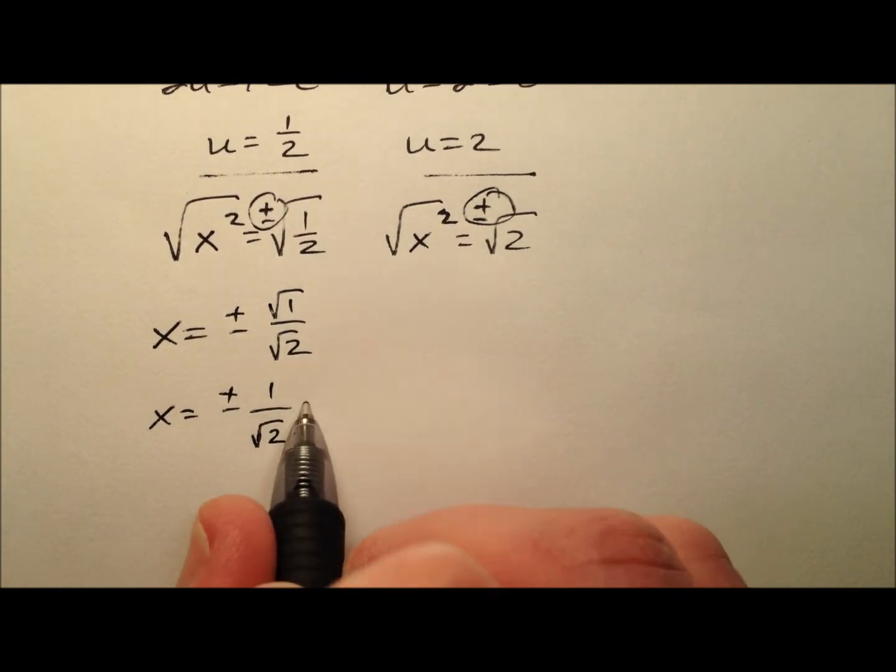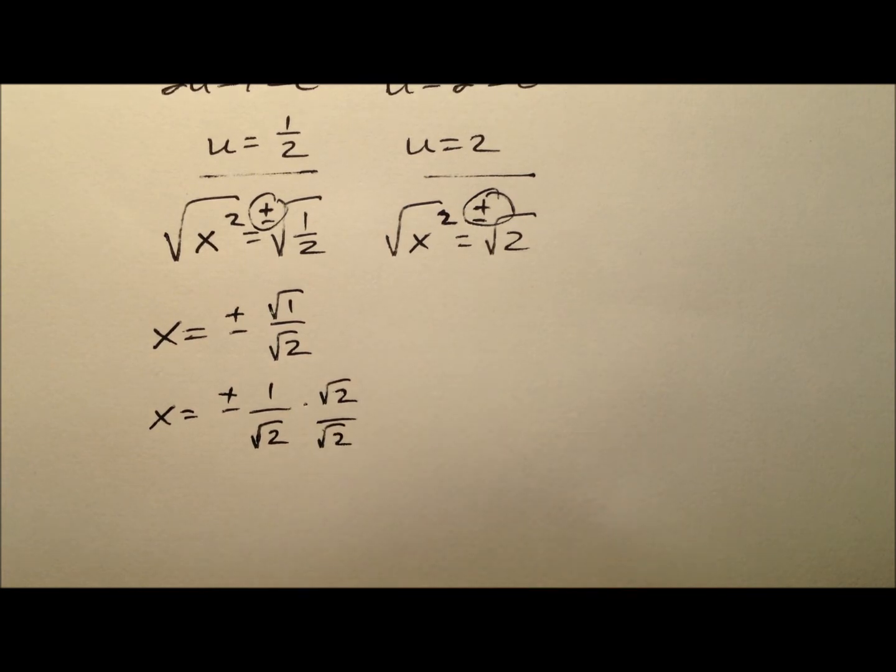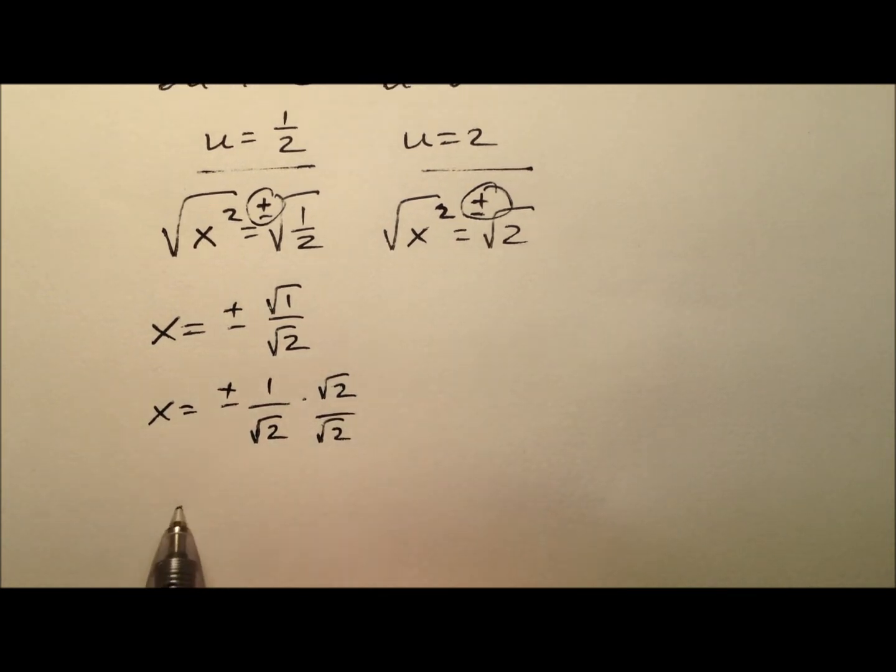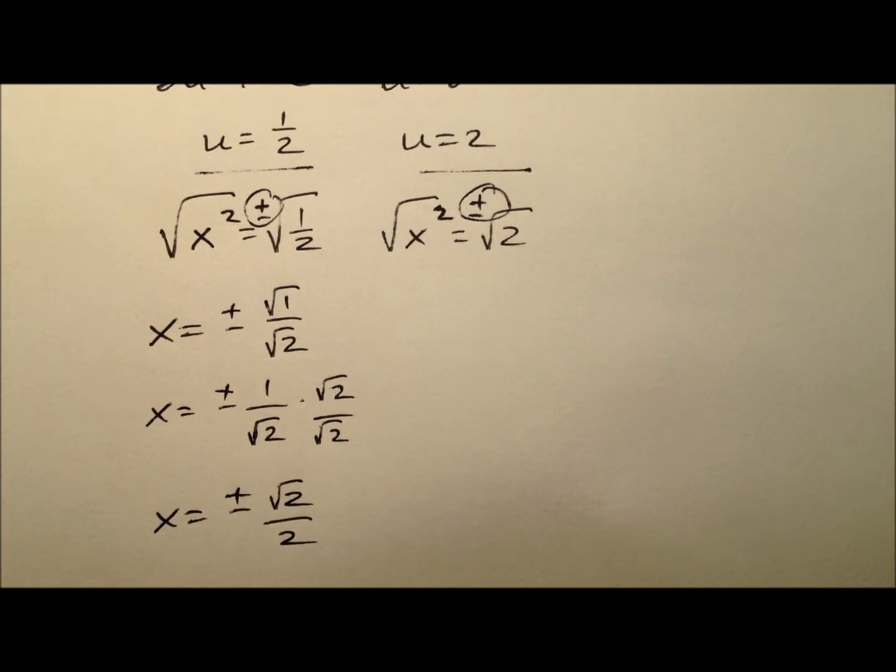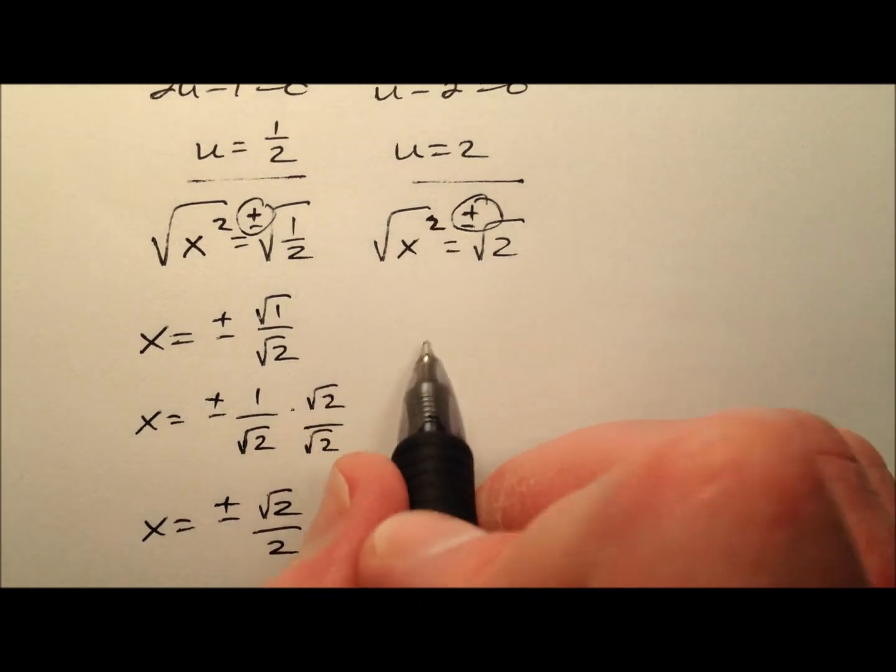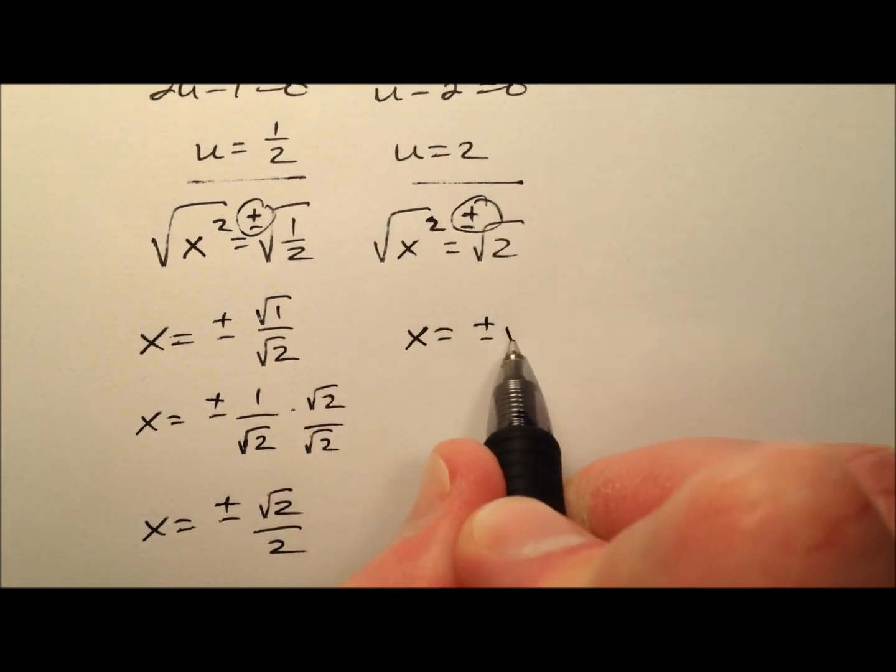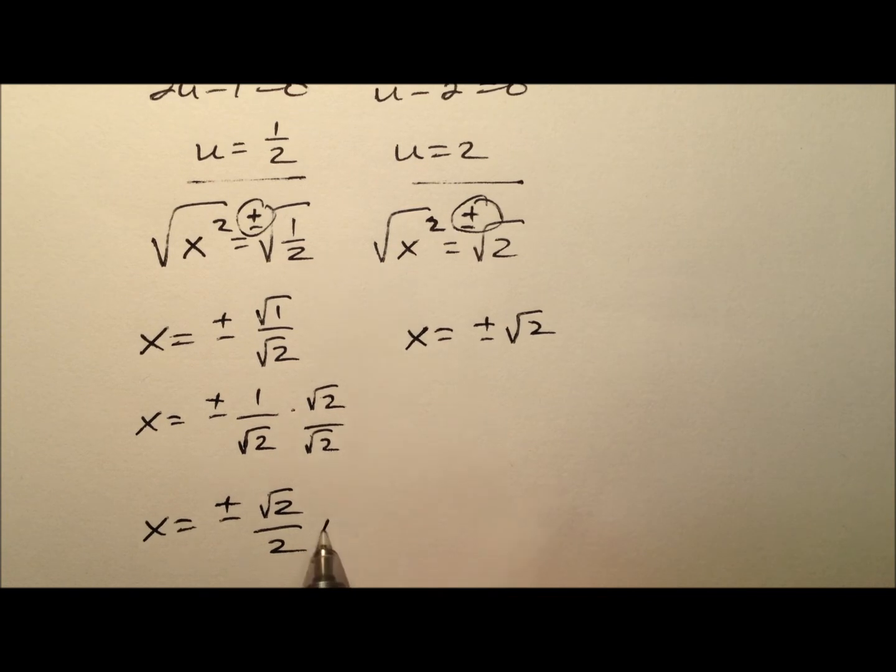We'll rationalize this denominator by multiplying by the square root of 2 over the square root of 2. Quickly we'll see x equals plus or minus the square root of 2 over 2 for one of our solutions. The other one is going to be a lot nicer - it's plus or minus the square root of 2.